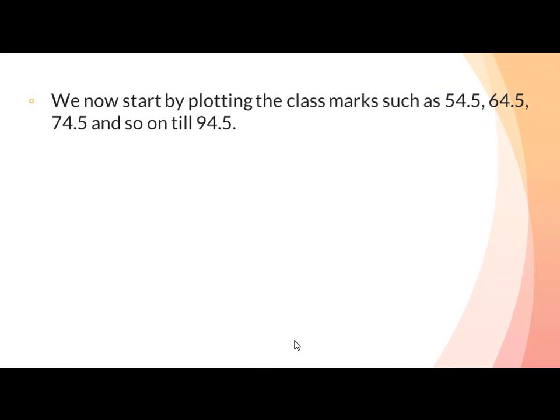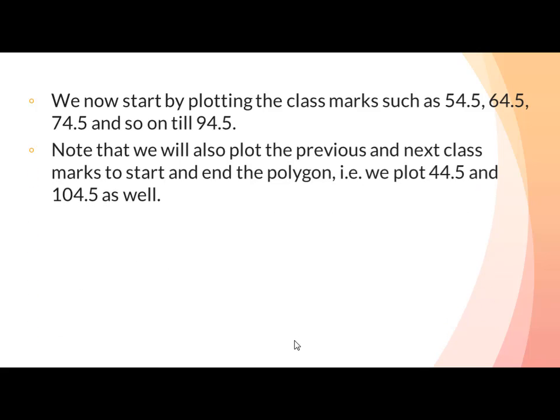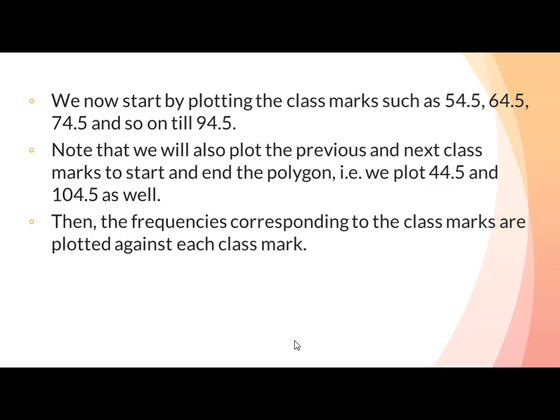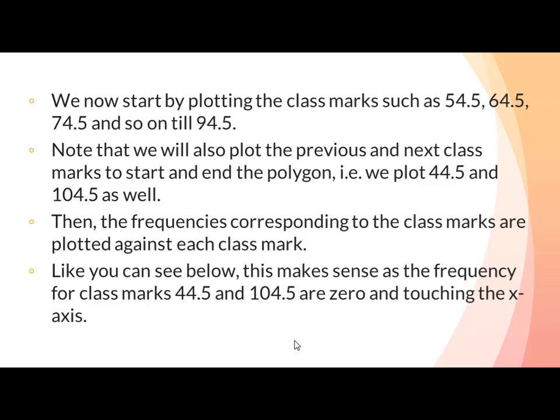We start by plotting the class marks such as 44.5, 54.5, 64.5, 74.5, and so on till 94.5. We also plot the previous and next class marks — 44.5 and 104.5 — to start and end the polygon. The frequencies corresponding to each class mark are then plotted, and the frequency for class marks 44.5 and 104.5 are 0, touching the x-axis.